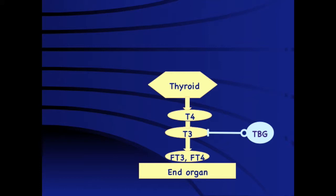While total T3 and T4 may be reliable if TBG levels are normal, in pathological situations where TBG levels may be low — such as liver disease or exogenous estrogen therapy — total hormones may not be a reliable way of assessing thyroid functions. In these situations, it is more appropriate to look at free hormones rather than total hormones.